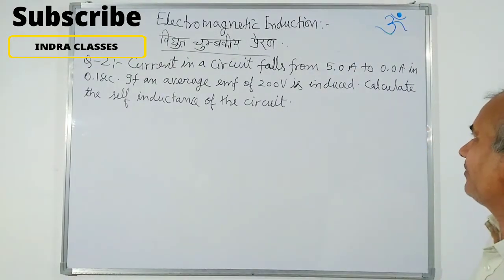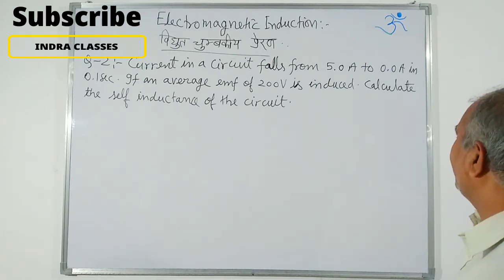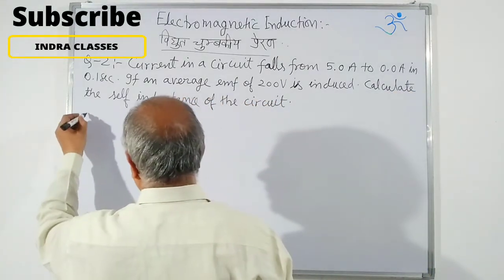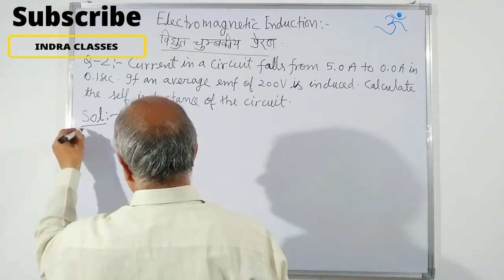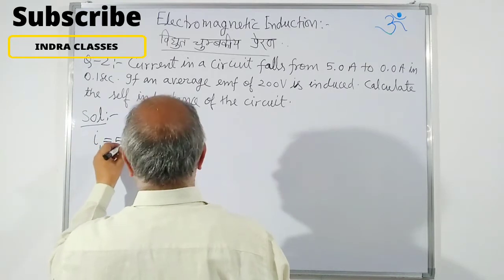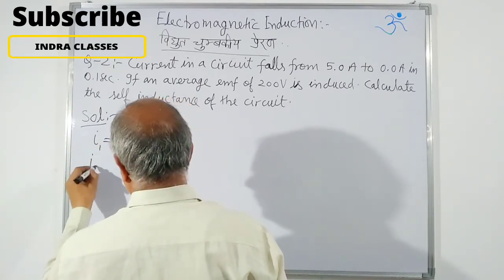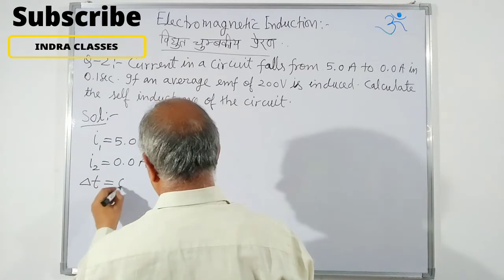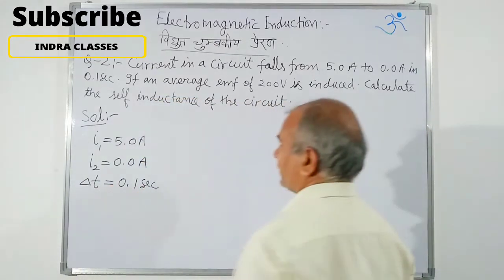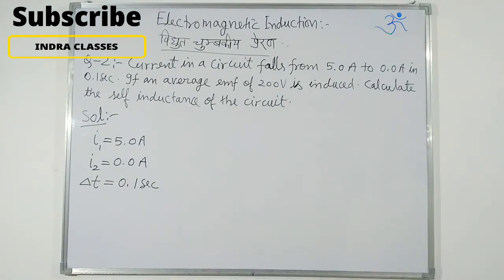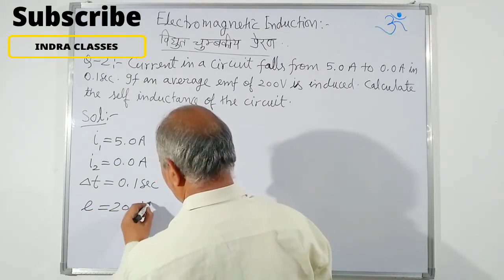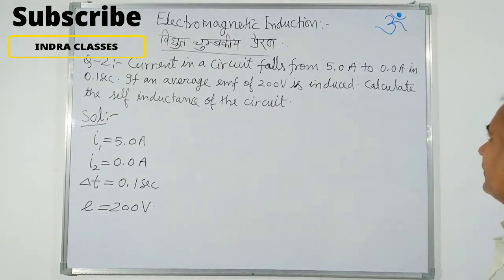Question number 2: Current in a circuit falls from 5 ampere to 0 ampere in 0.1 seconds. If the average induced EMF is 200 volts, calculate the self-inductance of the coil.